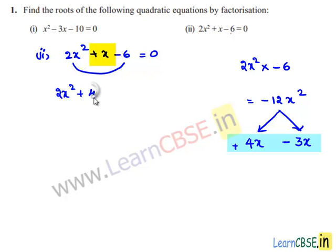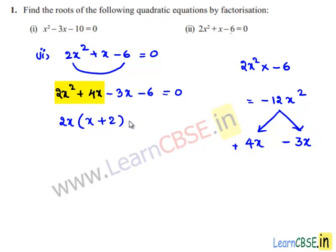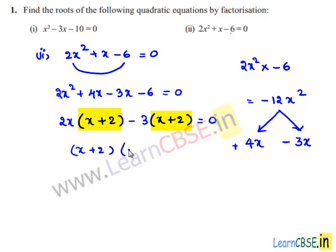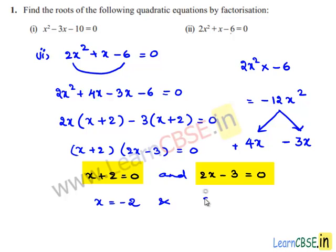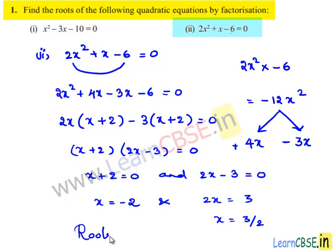So 2x squared plus 4x minus 3x minus 6 equals 0. Taking 2x as common: 2x(x plus 2), and taking minus 3 as common: minus 3(x plus 2). Taking x plus 2 as common, the remaining is 2x minus 3, giving (x plus 2)(2x minus 3) equals 0. Therefore x equals minus 2 and x equals 3 by 2. The required roots are minus 2 and 3/2.